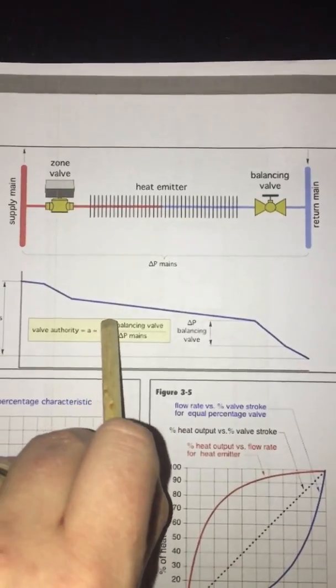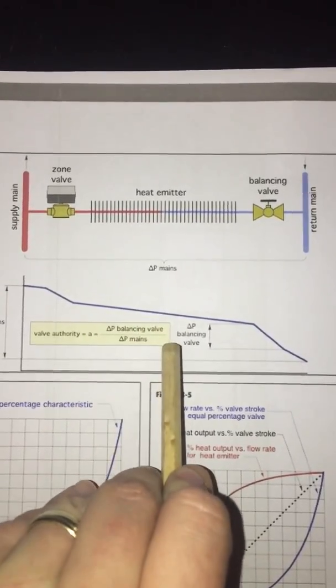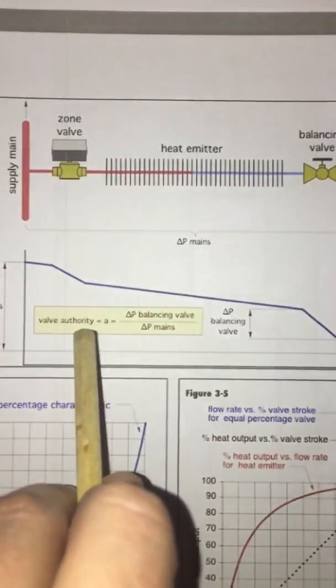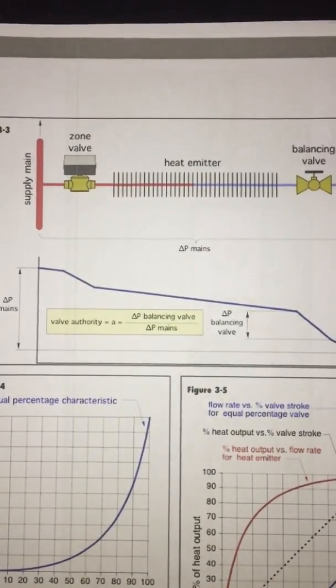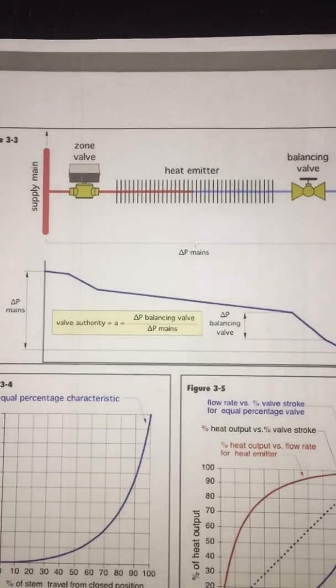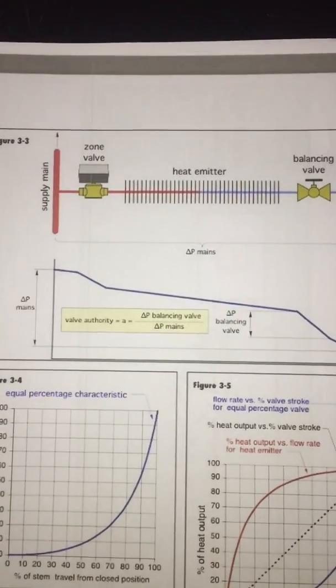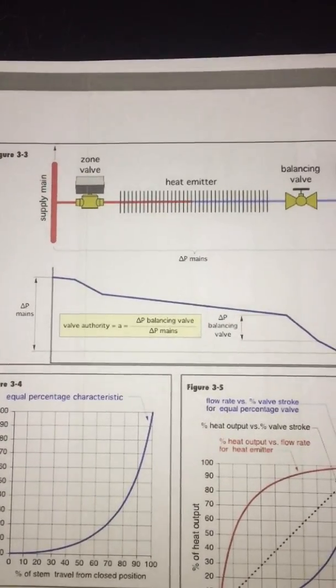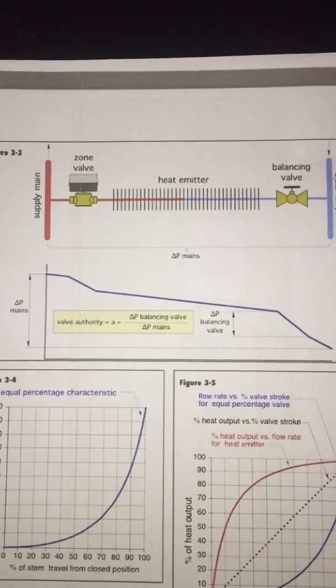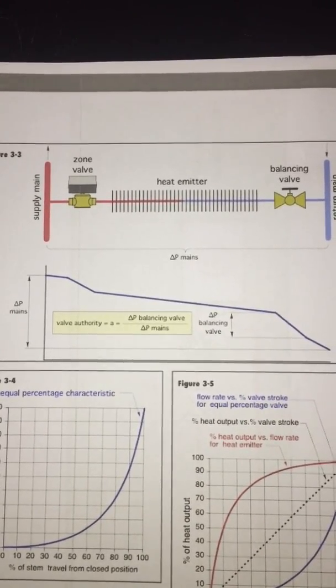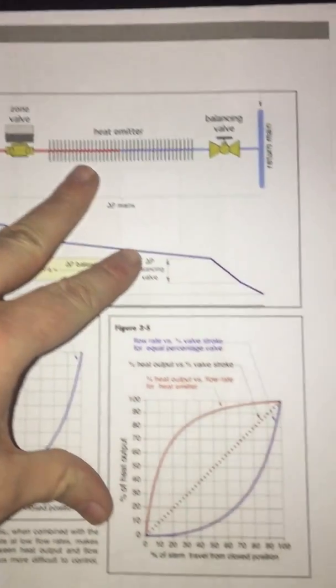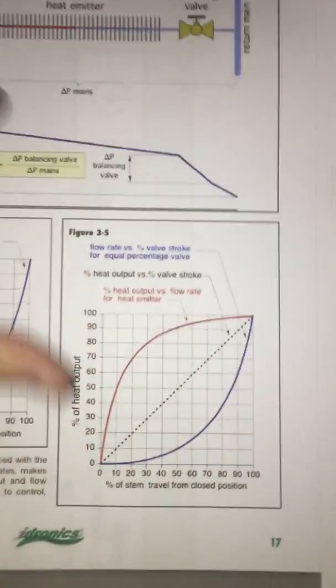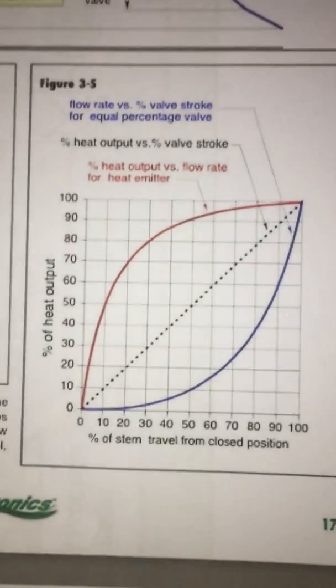So if we get the delta P of the balancing valve divided by a delta P of the mains, we'll have that valve authority figure that we want to be between 0.2 and 0.5, or between 20 and 50%. If it's more than 50% of the resistance of the total circuit, that could be considered uneconomical in terms of pump energy, or below 20% would definitely give poorer flow control, which is represented by this graph here.